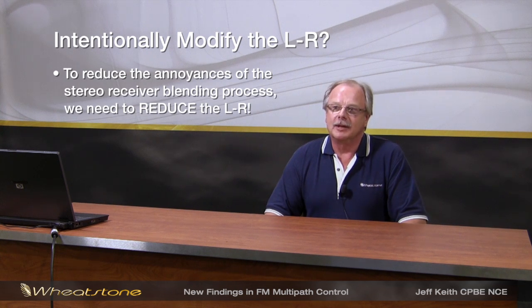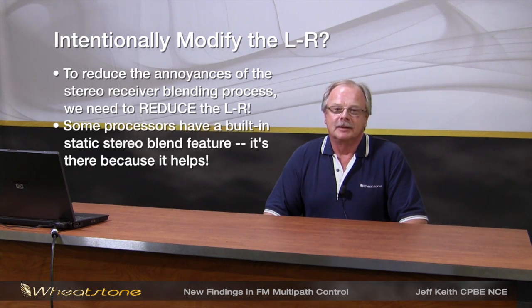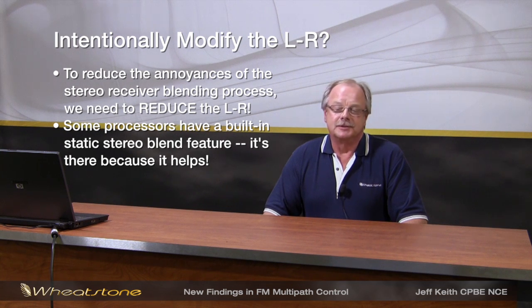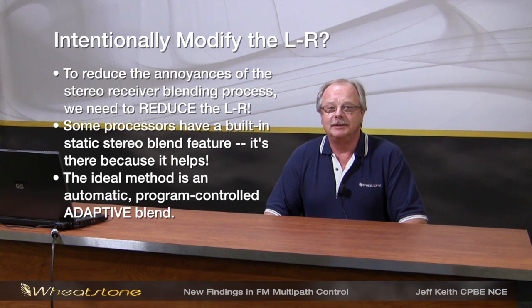The last thing is to intentionally modify only the L minus R signal. What I really mean is, to reduce the annoyance of blending in a stereo receiver, you need to manage the L minus R — and one of the ways we do that is we actually reduce it. In fact, some audio processors on the market have a feature that provides a static blend of 3 or 6 dB, and that feature is there because it actually works. But the ideal method is an adaptive blend, not a static blend.